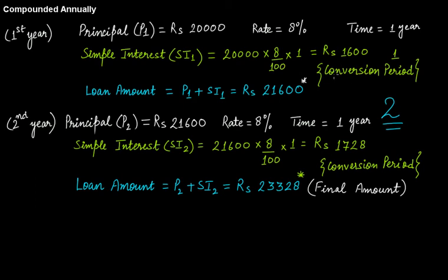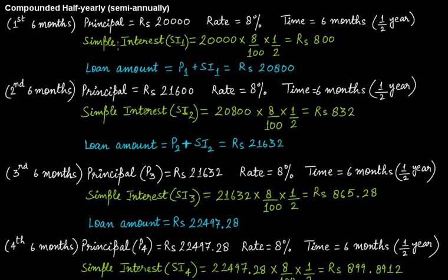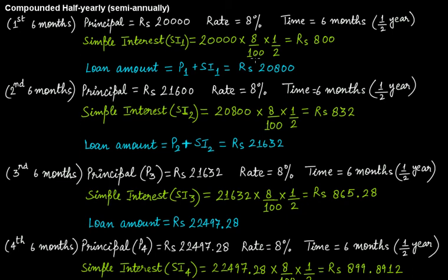If the interest rate is compounded semi-annually, interest is added to the previous principal after every six months. For the first six-month period, principal is rupees 20,000, rate is 8%, and time is six months (half a year). The interest P × R × T equals rupees 800. At the end of the first six-month period, the loan amount is P1 plus SI1 = rupees 20,800. This gives us the first conversion period.